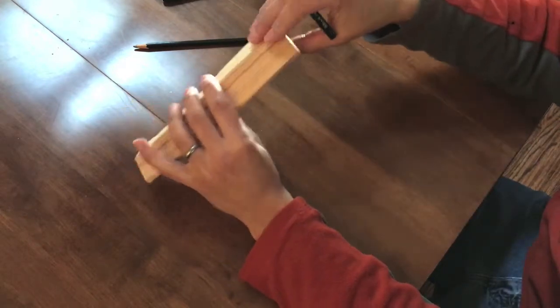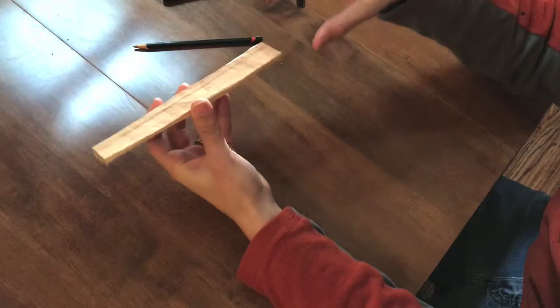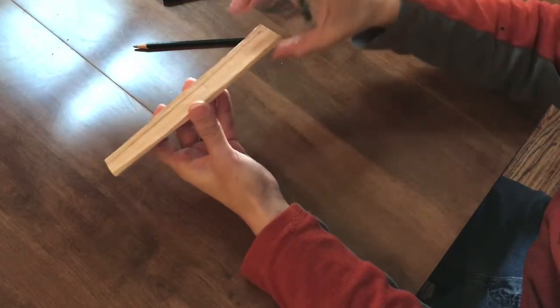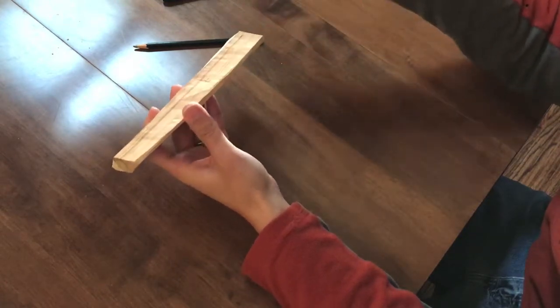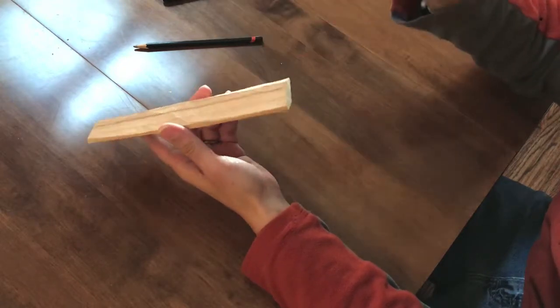In looking at this, I want to have my spoon bowl on this side and the handle on this side. That's just because this is a little bit thicker, and for the style of spoons that I like to make, having more over here lets me get a more drastic shape in the spoon bowl.